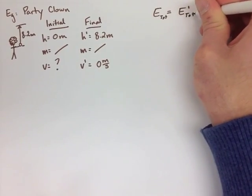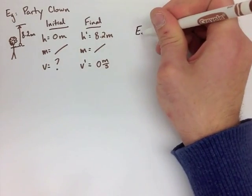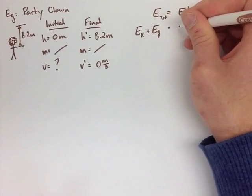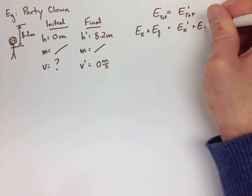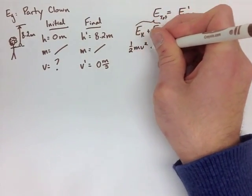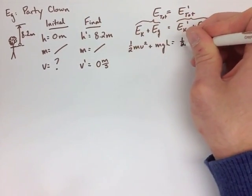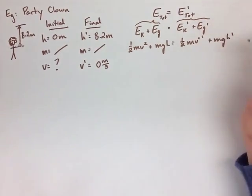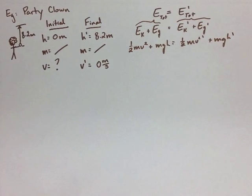So we use conservation of energy, where our total energy is the same in both cases. We always have kinetic and gravitational, so we're looking at both of those. We have kinetic energy plus gravitational in both cases. So we get 1/2 MV squared plus MGH equals 1/2 MV prime squared plus MGH prime, meaning our second value of H and V.